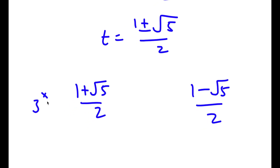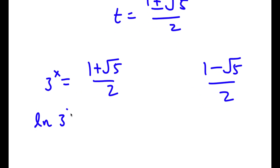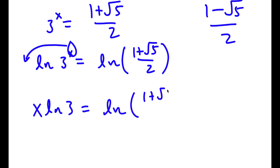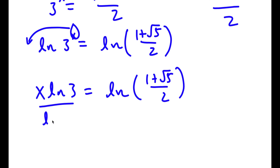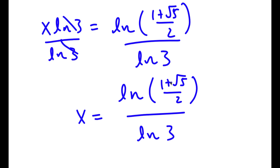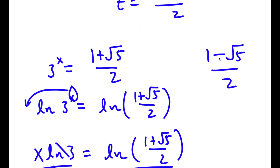So we move to our two solutions: t equals (1 plus the square root of 5) over 2 and t equals (1 minus the square root of 5) over 2. If 3 to the power of x equals (1 plus or minus the square root of 5) over 2, I take the natural log of both sides: x times ln 3 equals ln((1 plus or minus the square root of 5) over 2). Dividing both sides by ln 3 gives x equals ln((1 plus or minus the square root of 5) over 2) divided by ln 3.